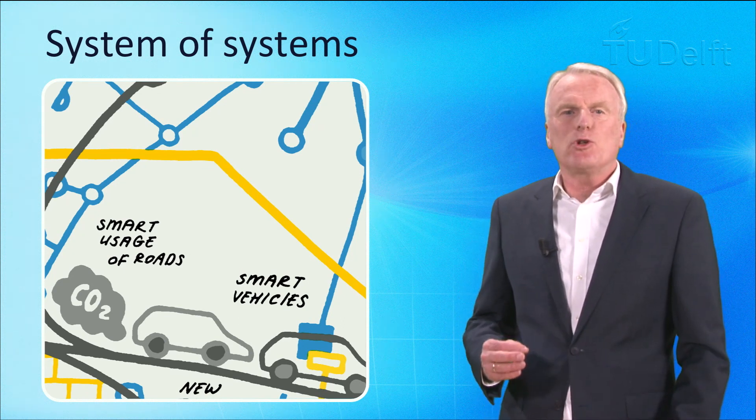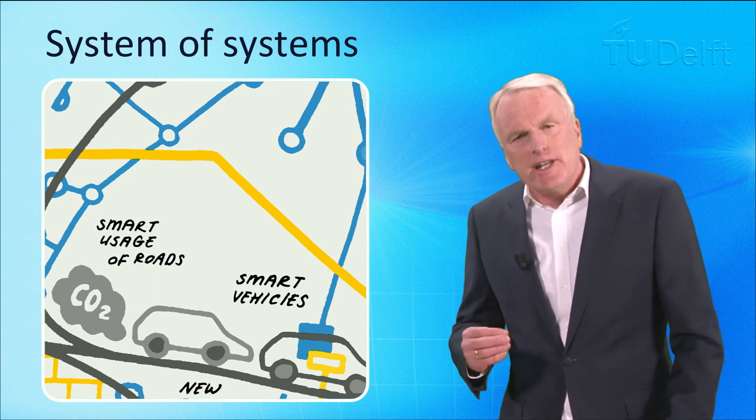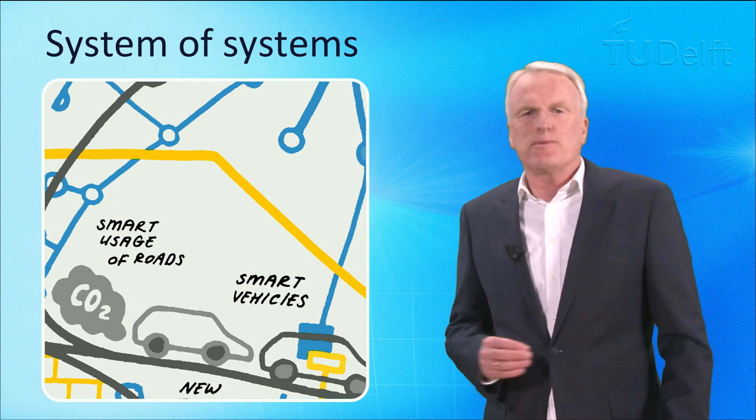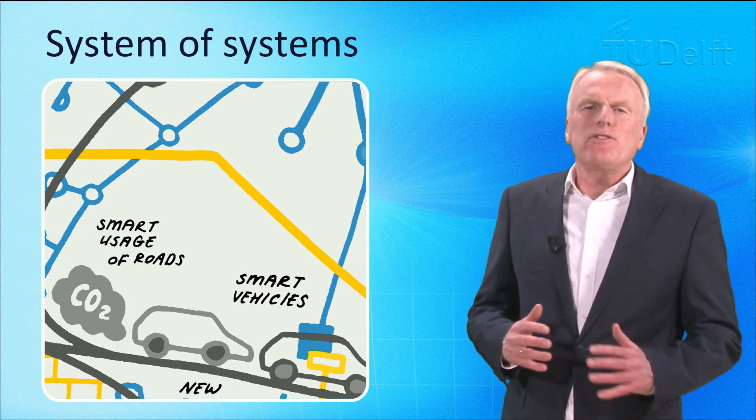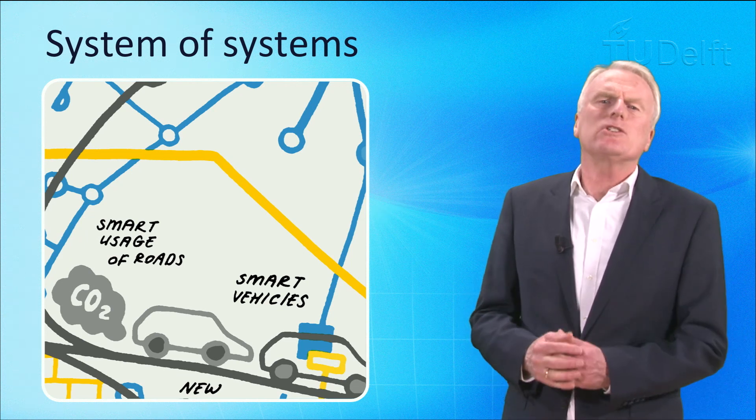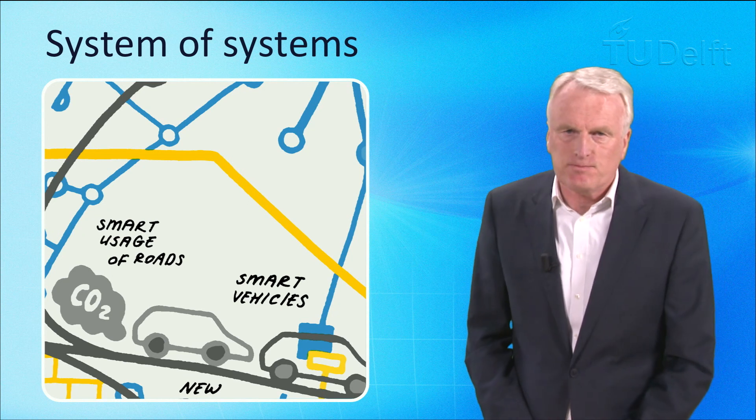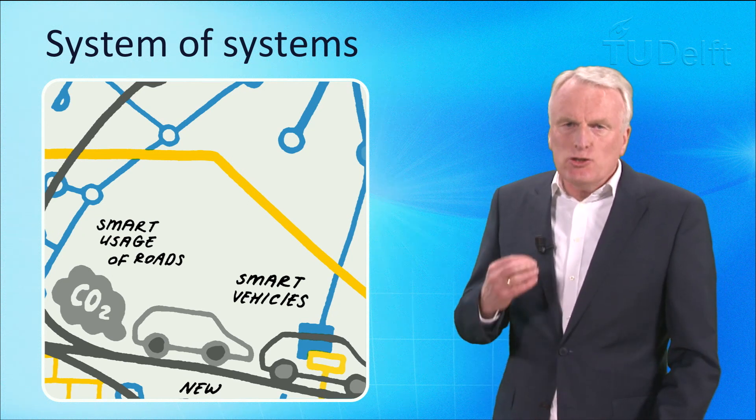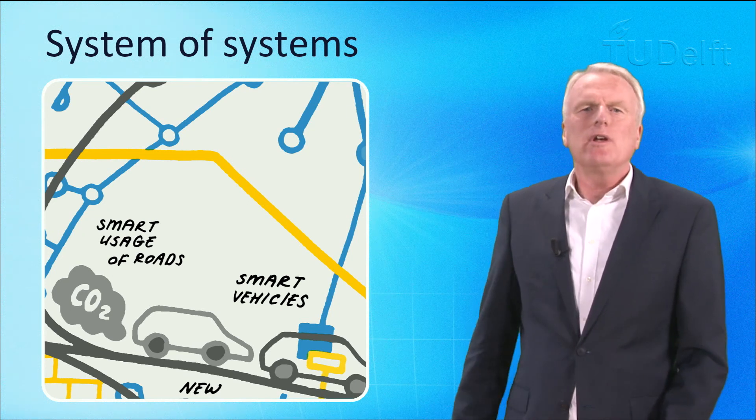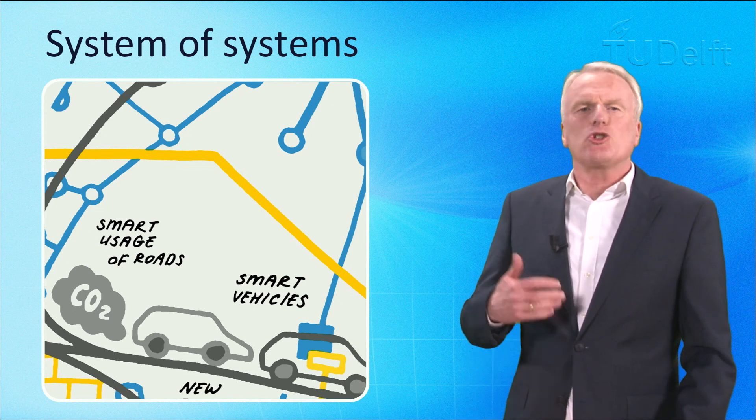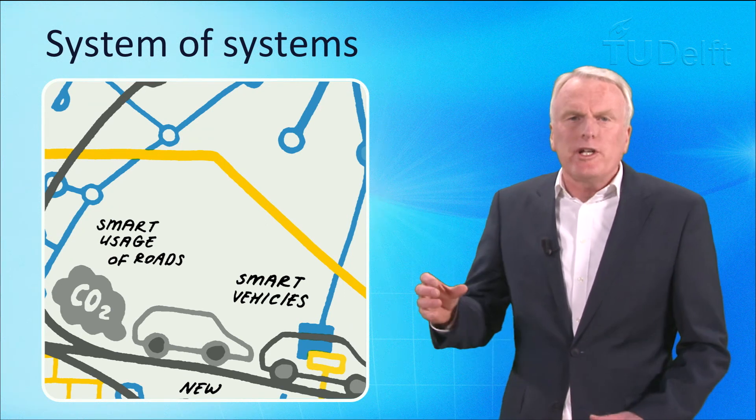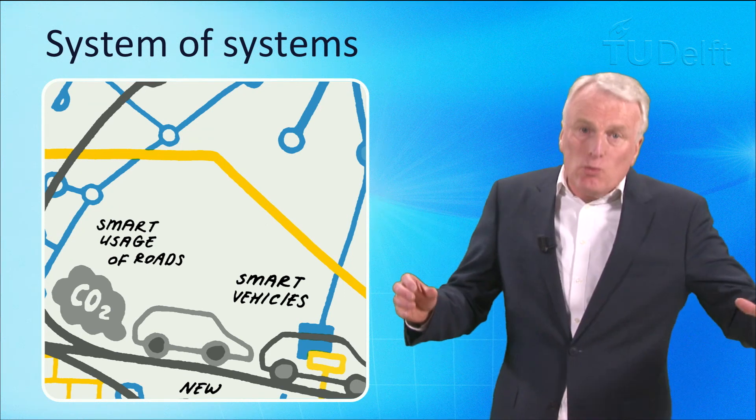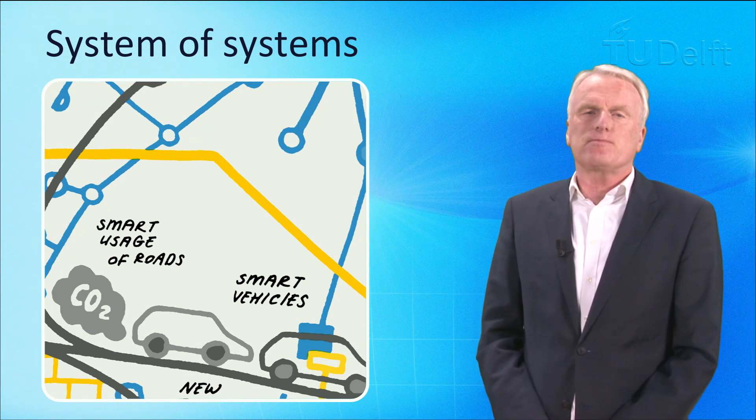As energy networks become smarter, they are increasingly web-based. A failing energy supply or a failing internet operation will paralyze other infrastructures. This has two consequences. One, infrasystems are becoming smarter and smarter and two, problems in one infrasystems are propagated to other infrasystems.